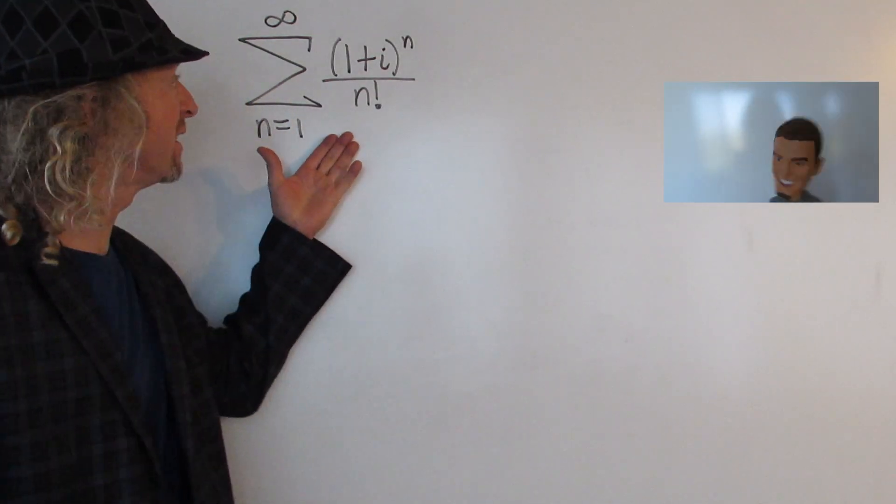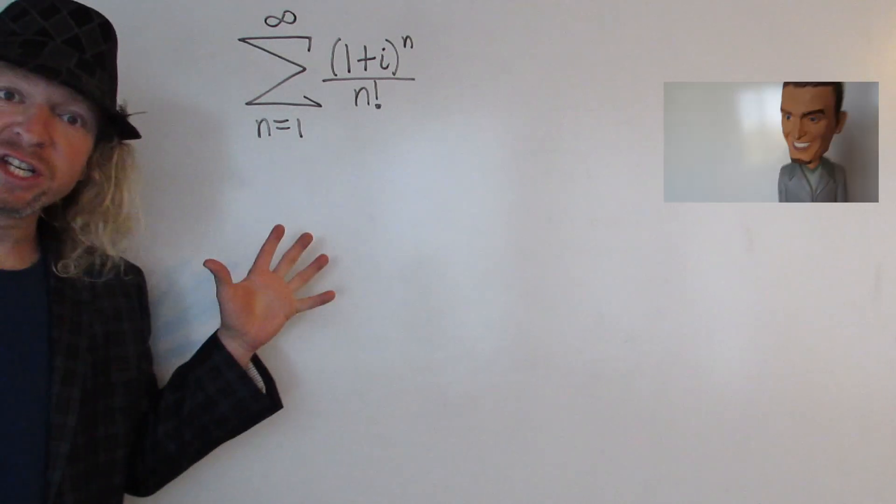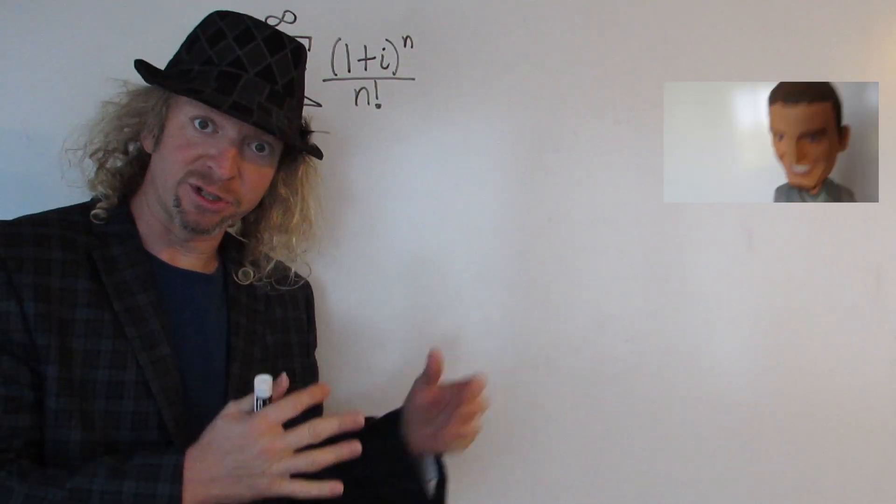Hey, what's up YouTube? In this problem we have an infinite sum of complex numbers. And the question is, does it converge or diverge?